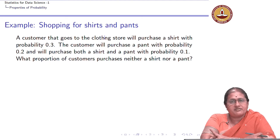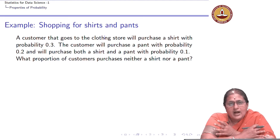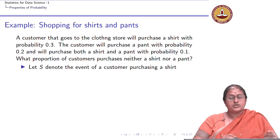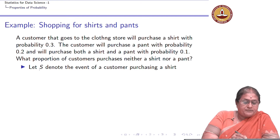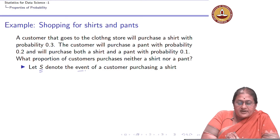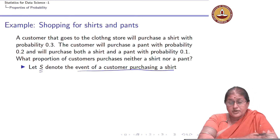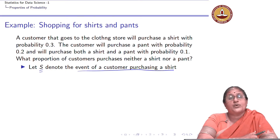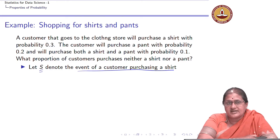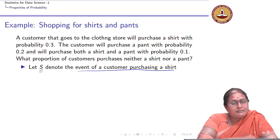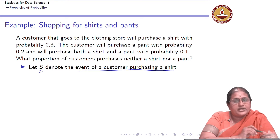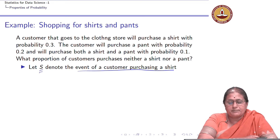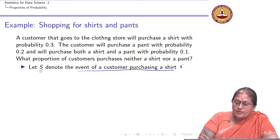The first step is to identify the information as events. Let me denote the first event by S — S is the event of a customer purchasing a shirt. There is an element of uncertainty here; we say the customer might buy a shirt, not will buy a shirt. The probability with which a customer buys a shirt is 0.3.